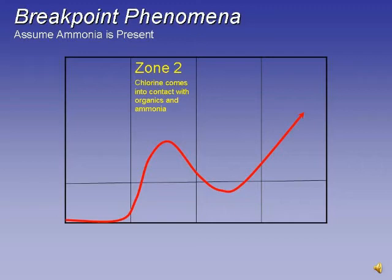Zone 2: Chlorine comes into contact with organics and ammonia, forming chlororganics and chloramines. These are also known as trihalomethanes (TTHMs) or haloacetic acids (HAA5), which are also formed in this zone.